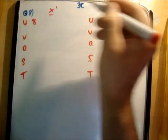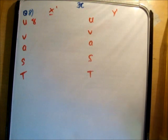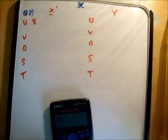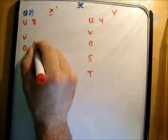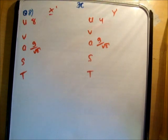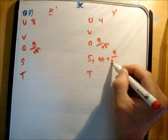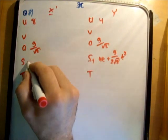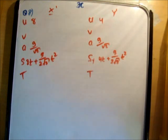This was 8. This was 4. This here was g over root 2. This here was g over root 2. So we need to find out s sub y. So it's ut plus a half at squared. So it's 4t plus g over 2 root 2 t squared. And here it's 8t plus g over 2 root 2 t squared.